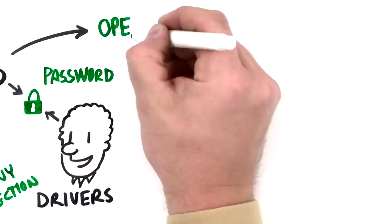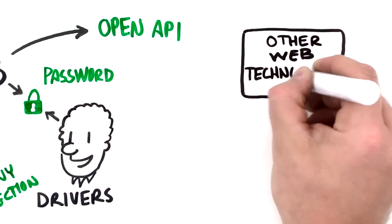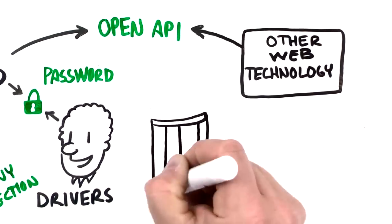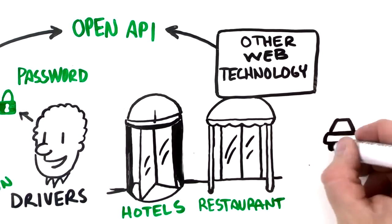T-Dispatch has an open API too, so it can interact with other web technologies, whether it's hotels, restaurants or partner cab offices.